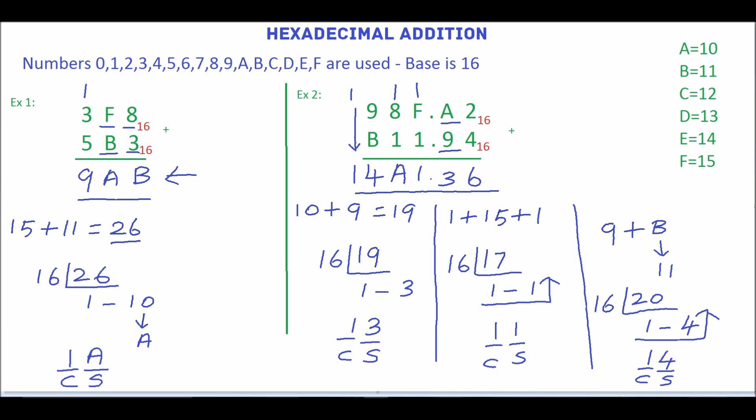1, 4, A, 1, 3, 6 is the sum of the above two hexadecimal numbers. Thank you.